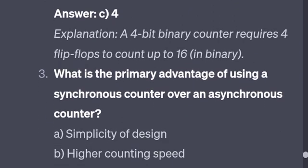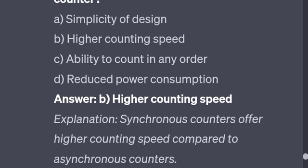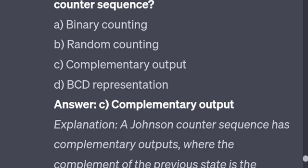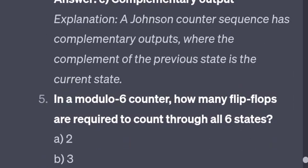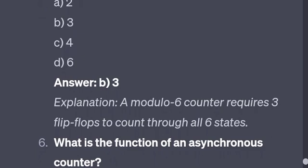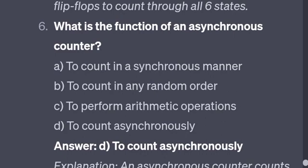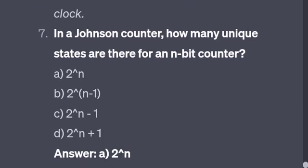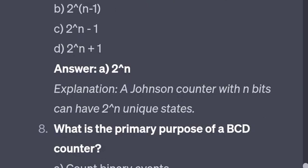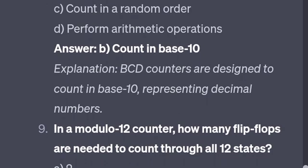What are the primary advantages of a synchronous counter over an asynchronous counter? Higher counting speed. What is the key characteristic of a Johnson counter? Complementary output. In a modulo-6 counter, how many flip-flops are required to count through all six states? Three flip-flops. What is the function of an asynchronous counter? To count asynchronously. In a Johnson counter, how many unique states are there for an N-bit counter? 2 to the power of N. What is the primary purpose of a BCD counter? To count in base 10.